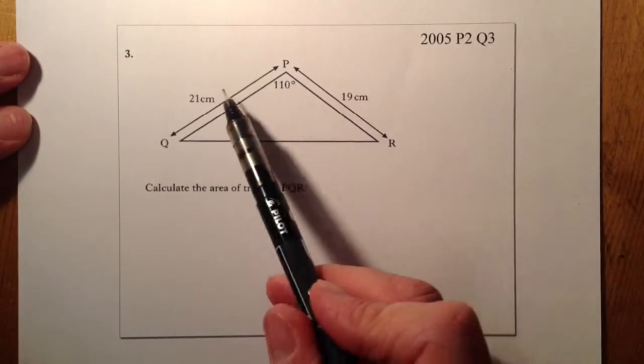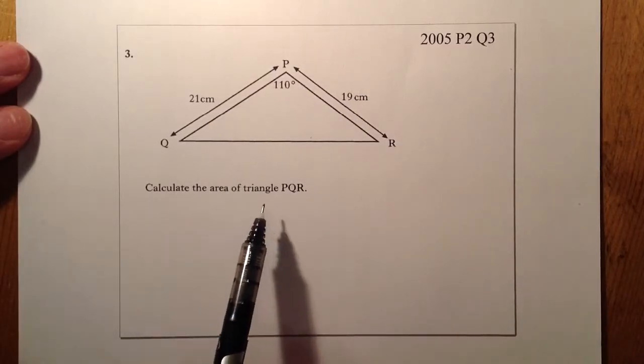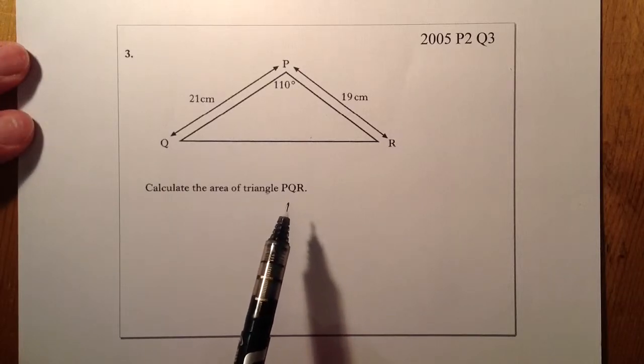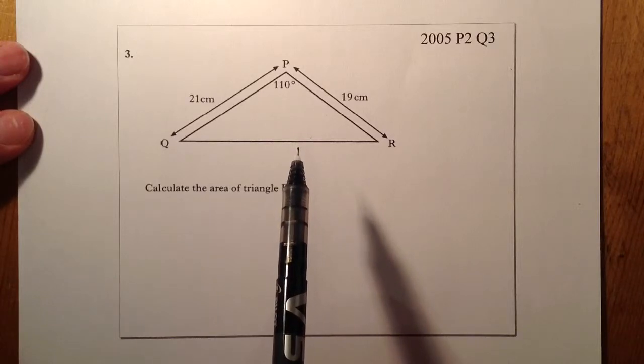Right, I have a triangle here with some values around it. I've got an angle and two of the sides. Calculate the area of triangle PQR. Okay, so I know it's not a right angle triangle, so I can't be using just the normal area of a triangle formula.